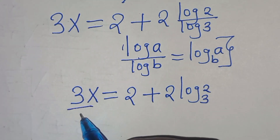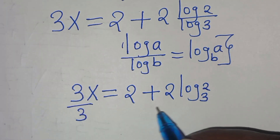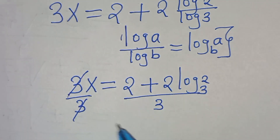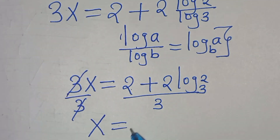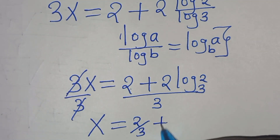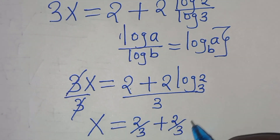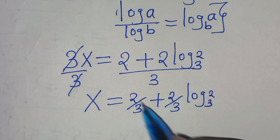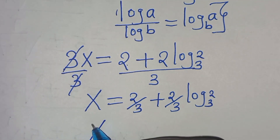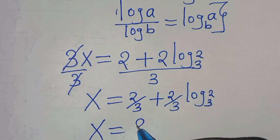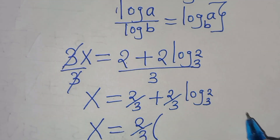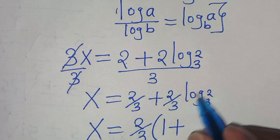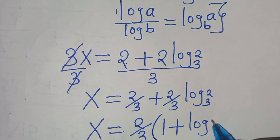The next step is to divide both sides by 3, so 3 and 3 simplify. x equals 2/3 plus 2/3·log₃2. Since 2/3 is common, we can factor it out, giving x equals (2/3)(1 + log₃2).